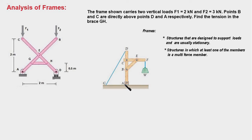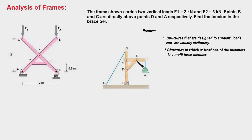In this example, member ABCD is a multi-force member because forces are exerted at four points: A, B, C, and D. Member CEF is also a multi-force member because forces are exerted at three points: C, E, and F. However, member BE is a two-force member because forces are exerted only at two points, B and E. So this structure is a frame because there are two multi-force members.